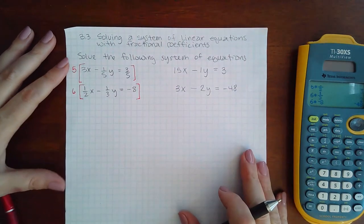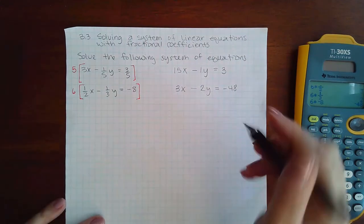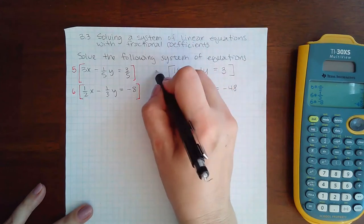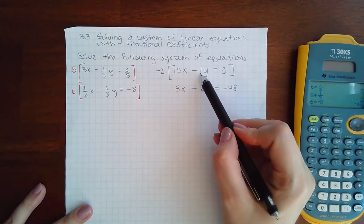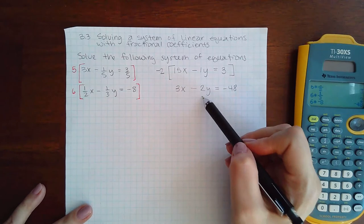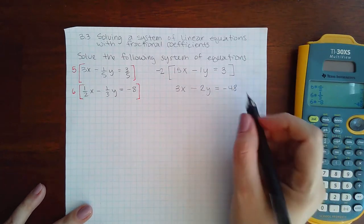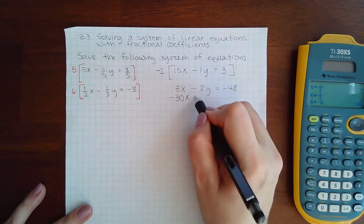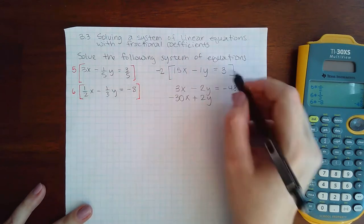I'm going to multiply the top one by negative 2, because negative 2 times negative 1 will give me positive 2 that will cancel out this negative 2. When I do that, I get negative 30x, then I get positive 2y, and then I get negative 6.